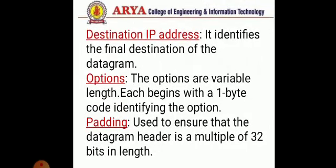Next are the options field and padding. The options are variable length. Each begins with a 1-byte code identifying the option. Some options are followed by a 1-byte option length field and then one or more data bytes. The options field is padded out to a multiple of 4 bytes. Padding is used to ensure the datagram header is aligned to the required boundary.